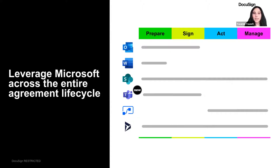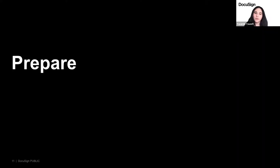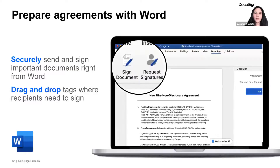Now let's take a look at some of the highlights of each stage in the context of Microsoft and DocuSign eSignature together. Starting with Prepare. As you think about the initial step of preparation of a document, let's start with Microsoft Word. With Microsoft Word, you can create and edit a document and then sign or send for signature all within a matter of a few clicks.